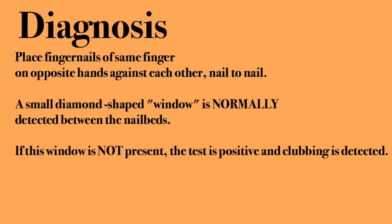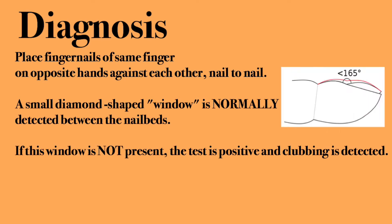Nail clubbing is diagnosed by placing fingernails of the same finger on opposite hands against each other, nail to nail. Normally, a small diamond-shaped window should appear. If this window is not present, then the test is positive and clubbing is present.